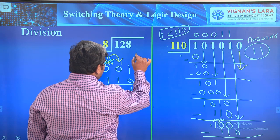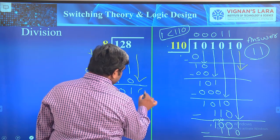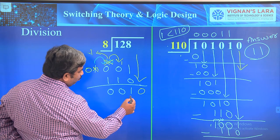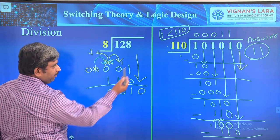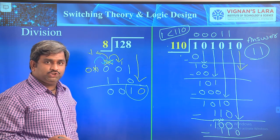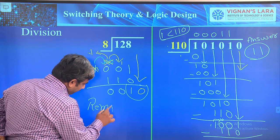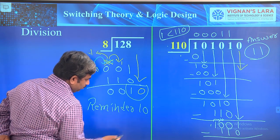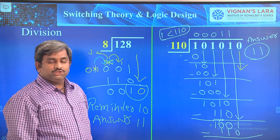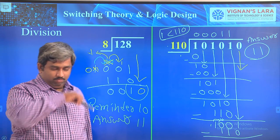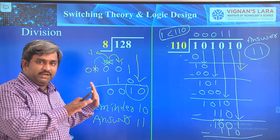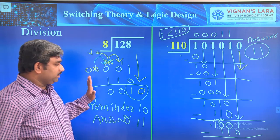Take the fifth value, which is 0. Now we have remainder 10. From 110 there is no possibility to divide — we cannot subtract, so 10 is the remainder. The answer is 11. This is the division process — done exactly as in the normal decimal number system learned from basic classes.